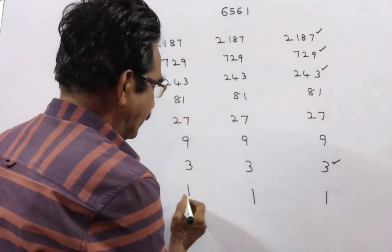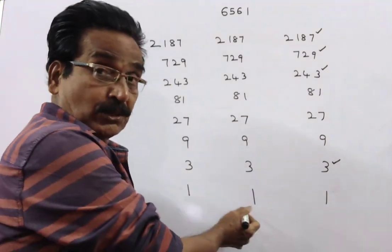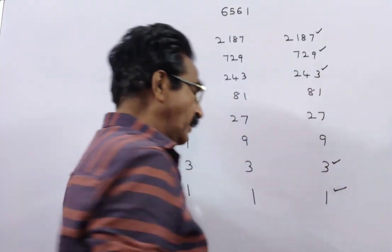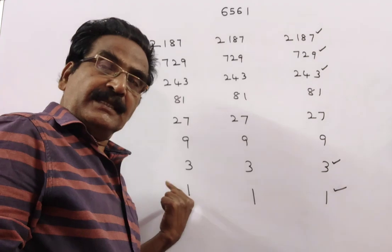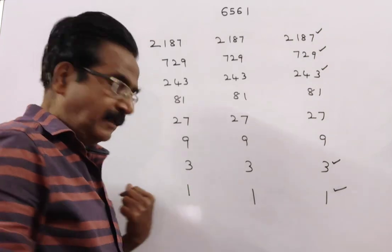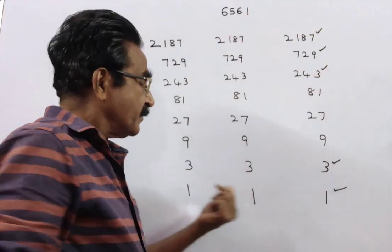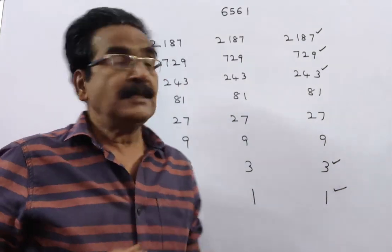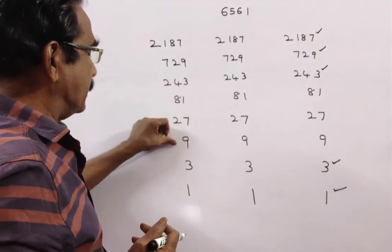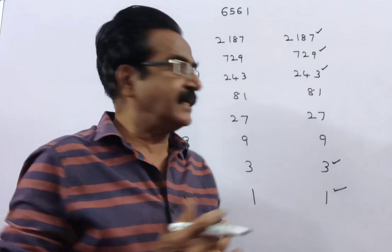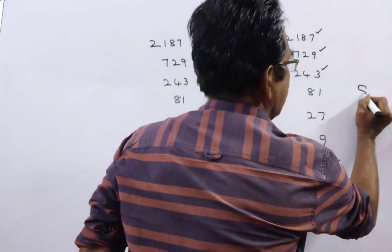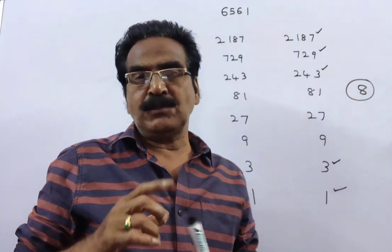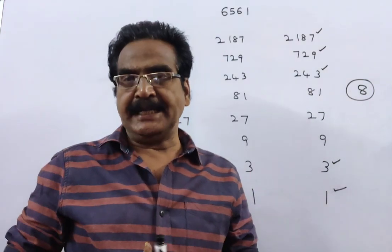Weigh them. If these two show the same balance, then this is the heavier ball. Or if the balance tilts to the left side, then this ball is the heavier ball. And if the balance tilts to the right side, then this ball is the heavier ball. So like this, in eight weighings — the maximum number of weighings — you can detect the heavier ball.